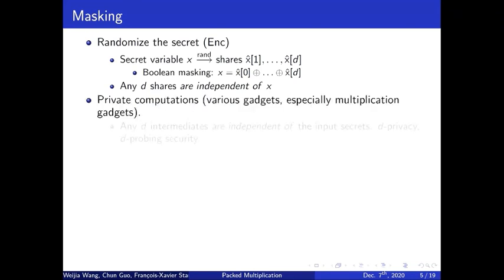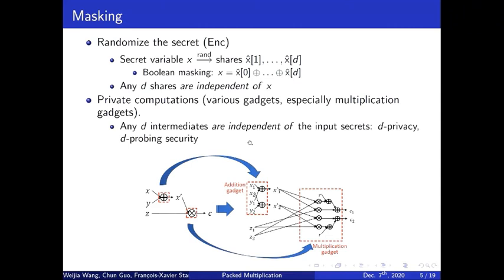Besides, the cryptography primitive usually is a computation from some input to some output. So we need to secure the computation, which requires the second ingredient, the private computation. Here I give an example. Say we want to compute x plus y times z, where x, y, z are circuit variables. What we can do is to transform each elemental operation into their correspondents in the masked domain, whose output and input are both shares. Here addition is transformed to addition gadget and multiplication is transformed to multiplication gadget. After those transformations, we can transform an unprotected computation to a protected one, ensuring that any d intermediates are independent of the input circuit. We call this kind of security as d-privacy or d-probing security.